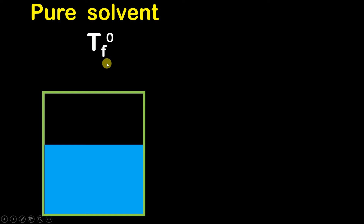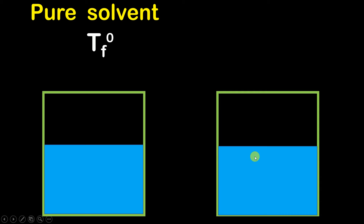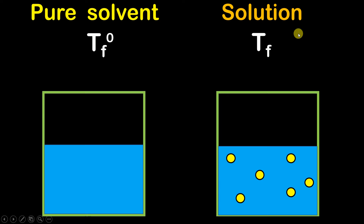Now I am going to consider another container with the same solvent, but here I am going to add a non-volatile solute to it. So inside this right-hand side container I am having a solution — the blue color is the solvent and the yellow color is the solute, and solute plus solvent gives us a solution.